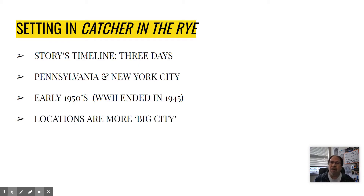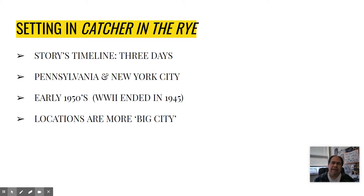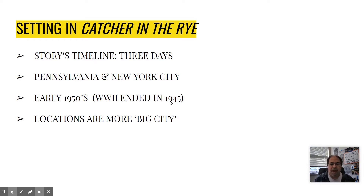The locations in Catcher in the Rye are a little more metropolitan and urban — more of a big city feel. The first few chapters are at a fancy private prep school for boys, meaning only rich people can go there. The rest of the locations are around New York City: nightclubs, a hotel, Central Park, and other iconic New York City locations. His parents live in a big fancy high-rise apartment where they share an entire floor with just one other family, giving you an idea of how wealthy they are.